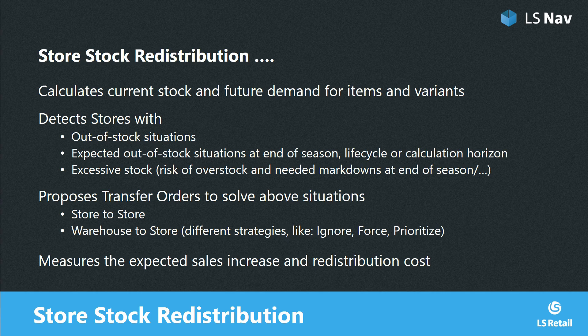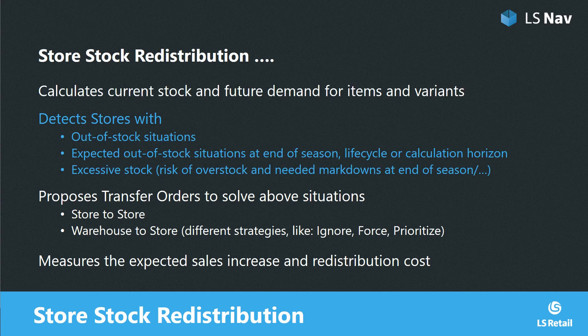Store stock redistribution calculates the current stock and the future demand for items and variants across all your stores. It then detects stores with either existing out-of-stock situations or expected out-of-stock situations — those which will show up at the end of the season, the life cycle, or the calculation horizon. We calculate expected out-of-stock situations from current stock and expected sales demand based on sales history. Stores selling below expectation have excessive stock, creating a high risk of being overstocked at the end of the life cycle.